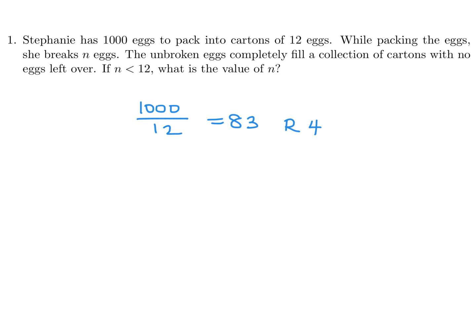That means you can put all those thousand eggs into 83 cartons, each carton holding 12 eggs, but you will have a remainder of 4. That remainder of 4 is basically representing the amount of eggs that were broken. Since they want n less than 12, n is 4, because we could have other values like 16, but they want a value less than 12.